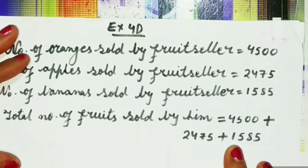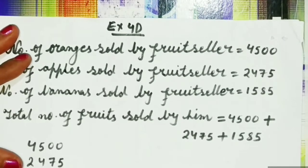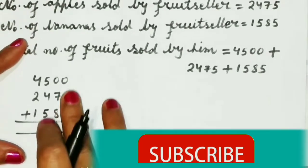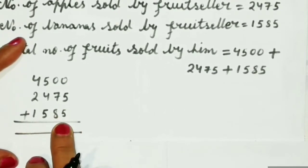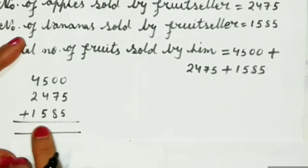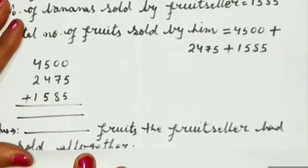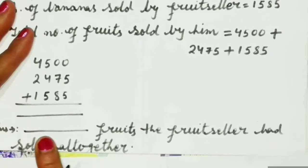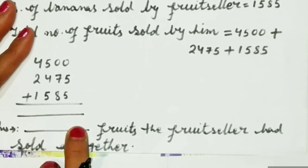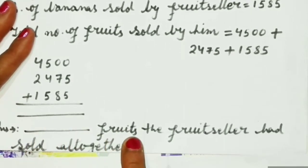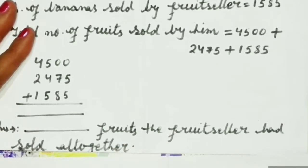2475 plus 1585. We will add all these three terms. Children, it's my instruction that you have to do the calculation and write your answer in this blank space. You have to write the answer digit here, then write 'fruits the fruit seller had sold altogether.' Children, we should eat fruits regularly to improve our immunity.